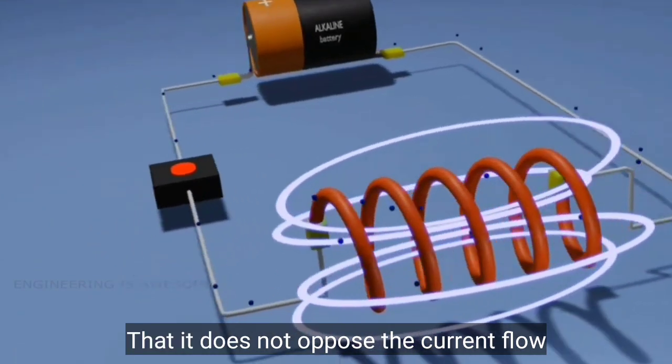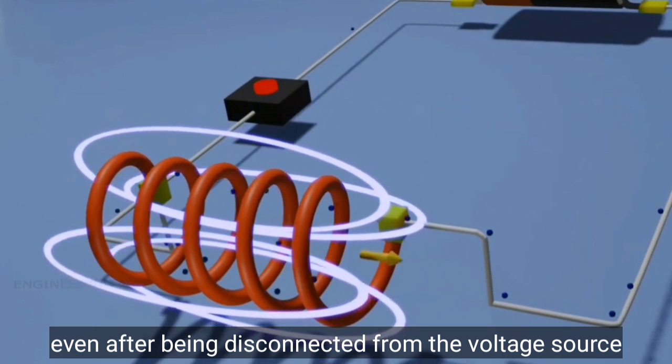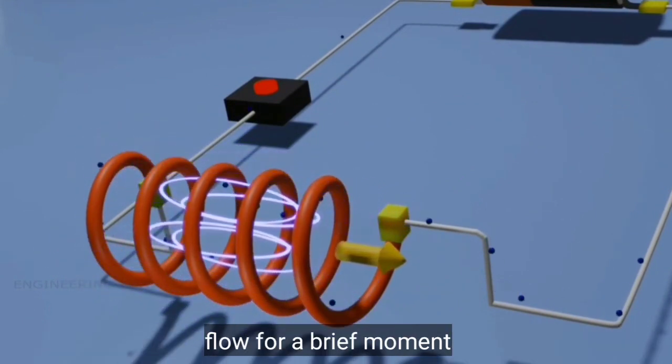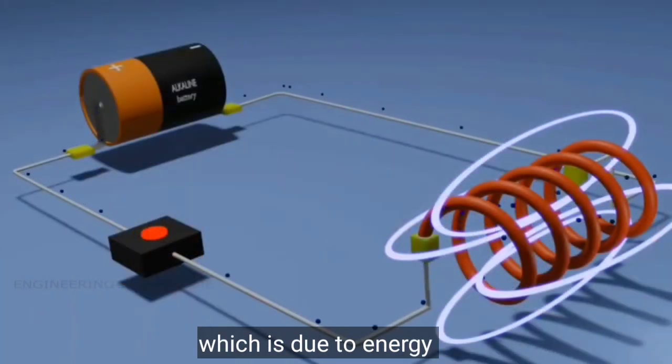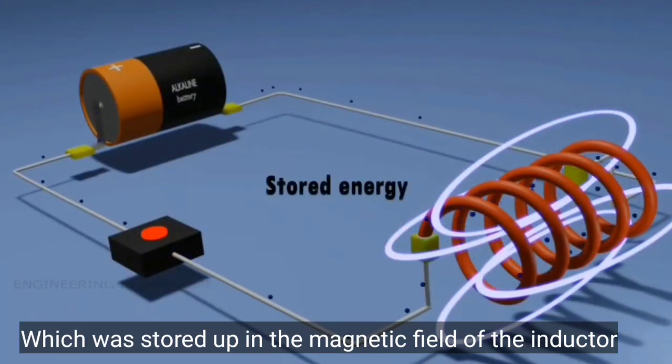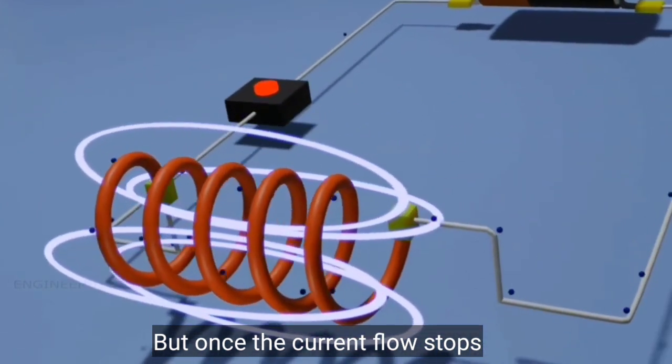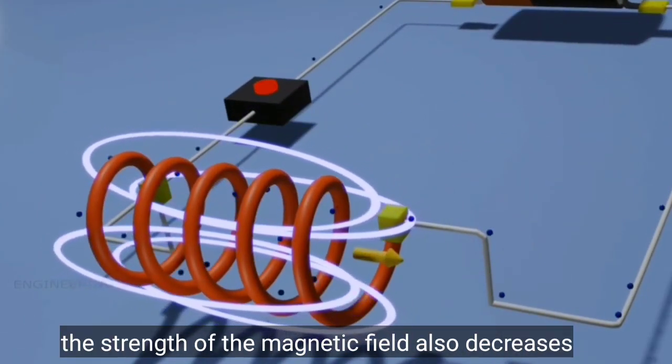It does not oppose the current flow even after being disconnected from the voltage source. The inductor has some current flow for a brief moment. This is due to energy which was stored up in the magnetic field of the inductor. The magnetic field is self-sustaining as long as there is current flow through the inductor. But once the current flow stops, the strength of the magnetic field decreases.